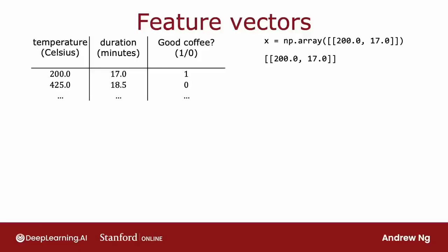Let's start by taking a look at how TensorFlow represents data. Let's say you have a dataset like this from the coffee example. I mentioned that you would write x as follows — so why do you have this double square bracket here? Let's take a look at how NumPy stores vectors and matrices. In case you think matrices and vectors are complicated mathematical concepts, don't worry about it. We'll go through a few concrete examples and you'll be able to do everything you need to implement your networks.